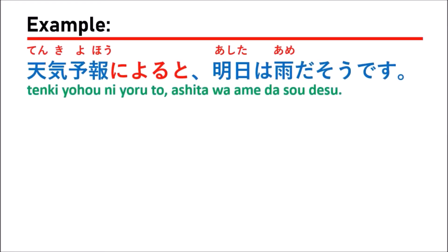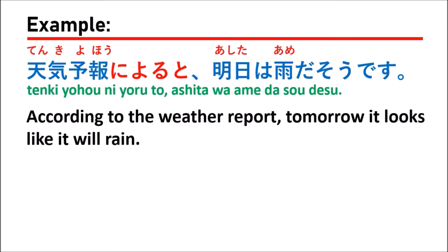The first example: 天気予報によると、明日は雨だそうです。 Which means: according to the weather report, tomorrow it looks like it will rain.